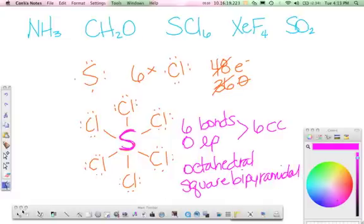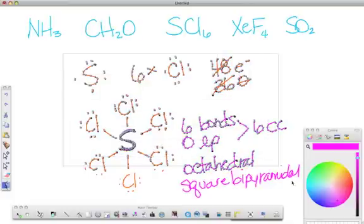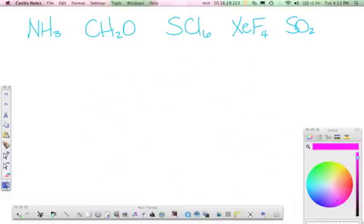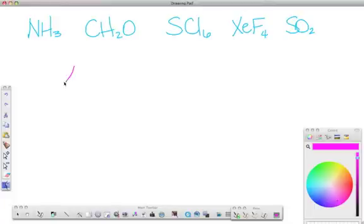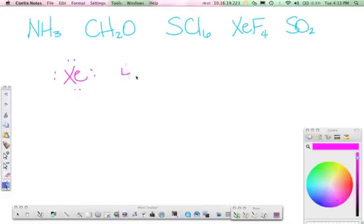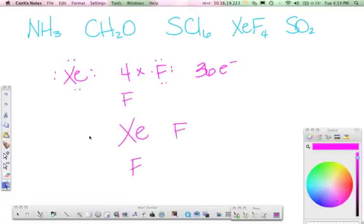Next up is XeF4, xenon tetrafluoride. Xenon is a noble gas, so it has a full octet. Why does it bond, you ask? Xenon and argon and krypton are capable of bonding. They don't do it very often, but they are capable of doing it. Fluorine is one of those elements that the noble gases just can't resist. We have four fluorines, each with seven valence electrons. That gives us a grand total of 36 electrons. Put the first element in the center, put the fluorines around it, connect them.